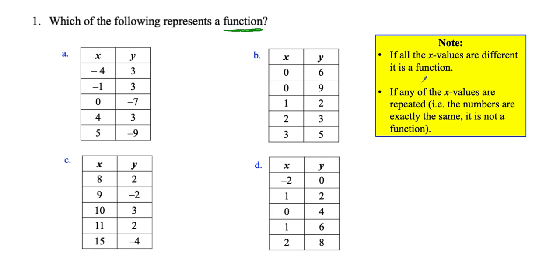They mean the same thing; they're just worded kind of in opposite ways. The first definition says: if all the x values are different, it is a function. The second says: if any of the x values are repeated — that is, the numbers are exactly the same — it is not a function.